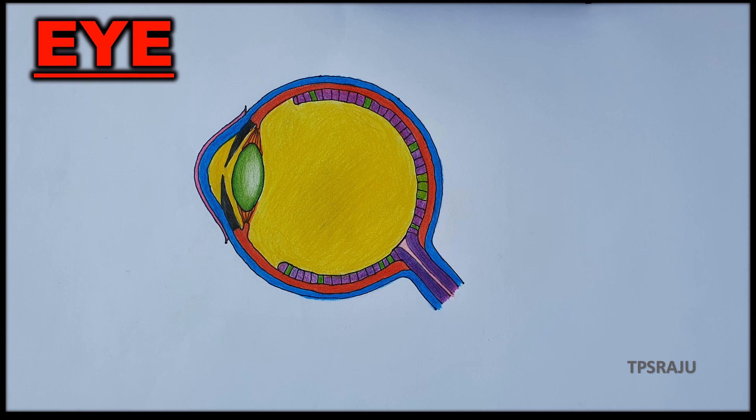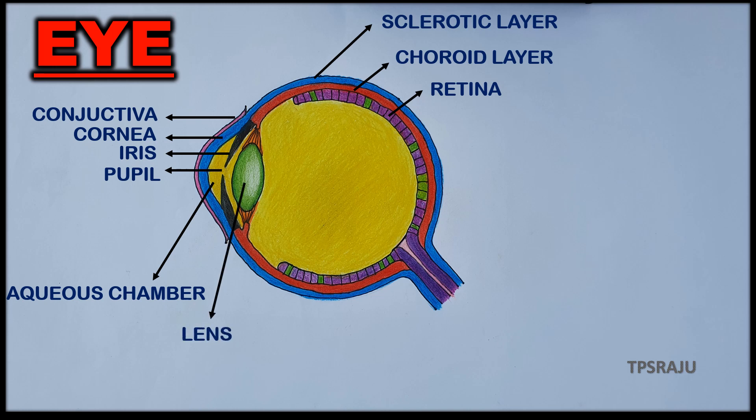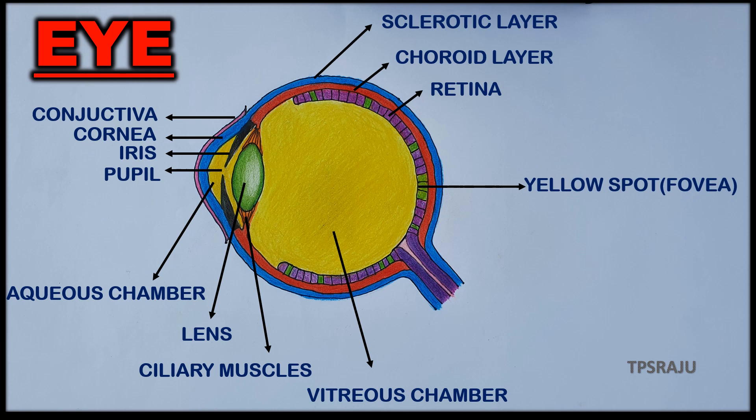Finally shall we label the parts. Sclerotic layer, choroid layer, retina, conjunctiva, cornea, iris, pupil, aqueous chamber, lens, ciliary muscles, vitreous chamber, yellow spot or fovea, blind spot, and optic nerve.